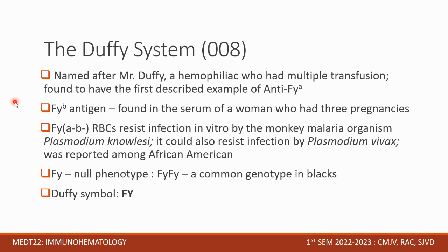Next, we have the Duffy system, ISBT number 008, with system symbol FY. It is named after Mr. Duffy, a hemophiliac who had multiple transfusions and was found to have the first described example of anti-FYA.